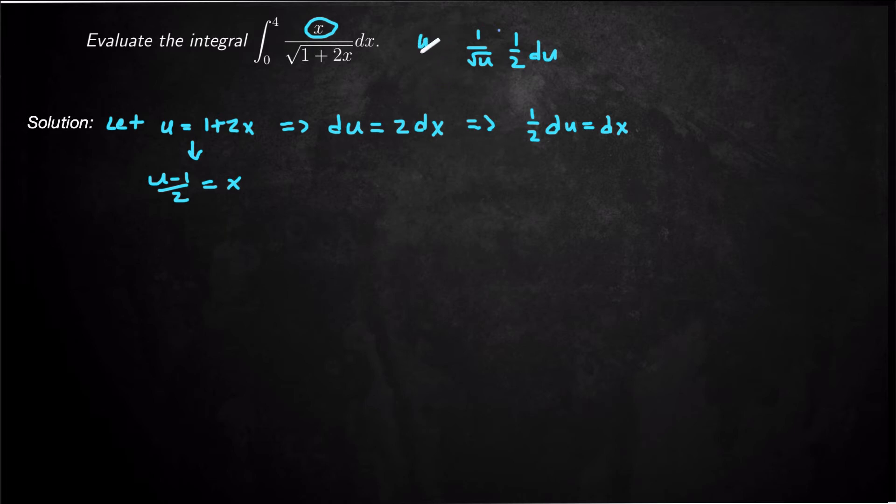I'm actually gonna have u minus 1 over 2 right there in the numerator. So that's basically my x. This is my 1 over square root term. Here's my dx. So now I've got my substitution all set up for my integral.